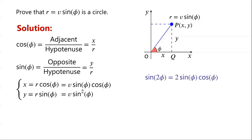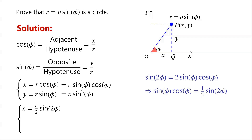We know that sin(2φ) equals 2·sin(φ)·cos(φ), so sin(φ)·cos(φ) equals one half times sin(2φ). Therefore, x equals v/2·sin(2φ).